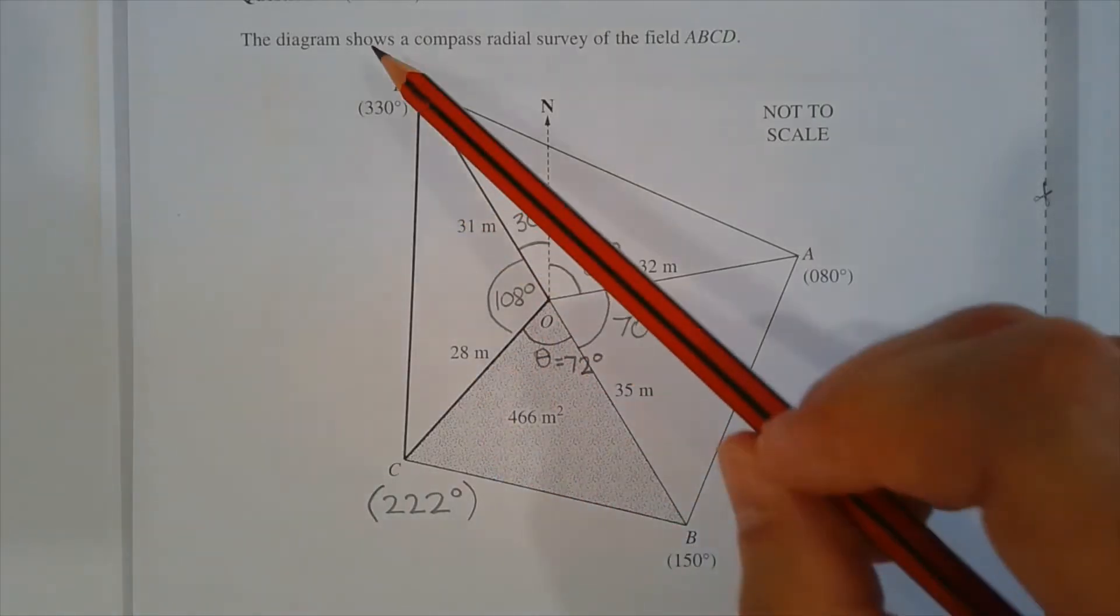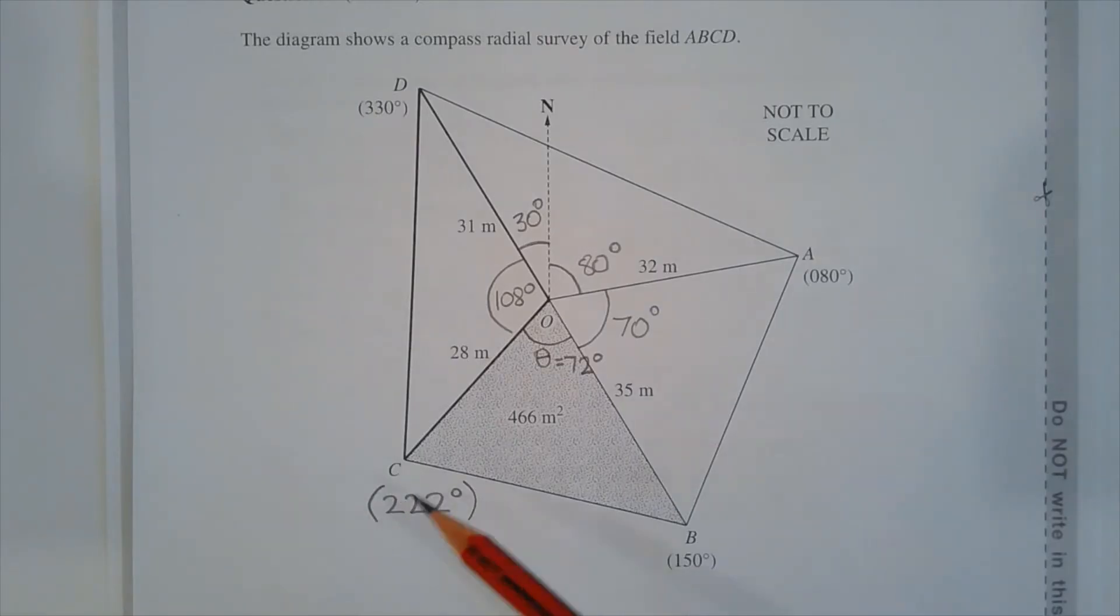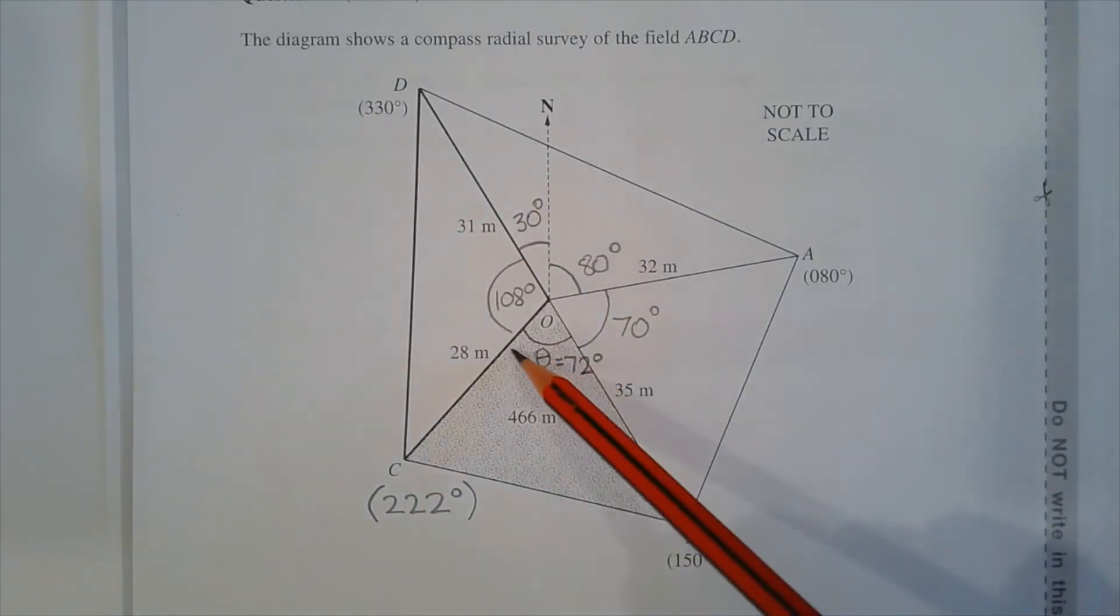To find angle DOC, we can take the bearing of D and subtract from that the bearing of C. So 330 degrees minus 222 degrees is equal to 108 degrees.